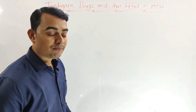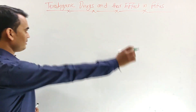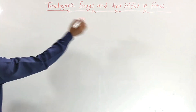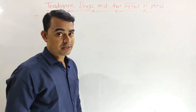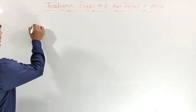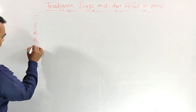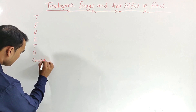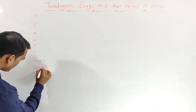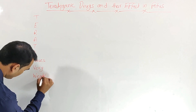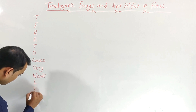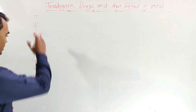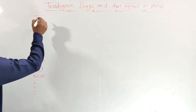So what are the different drugs and what are their defects? I'm going to give you a very easy trick that will definitely help you remember. The trick uses the word 'teratogenic' as a mnemonic. The phrase is: 'Terato Causes Very Weak Lip' — teratogenic — to help remember all these drugs.